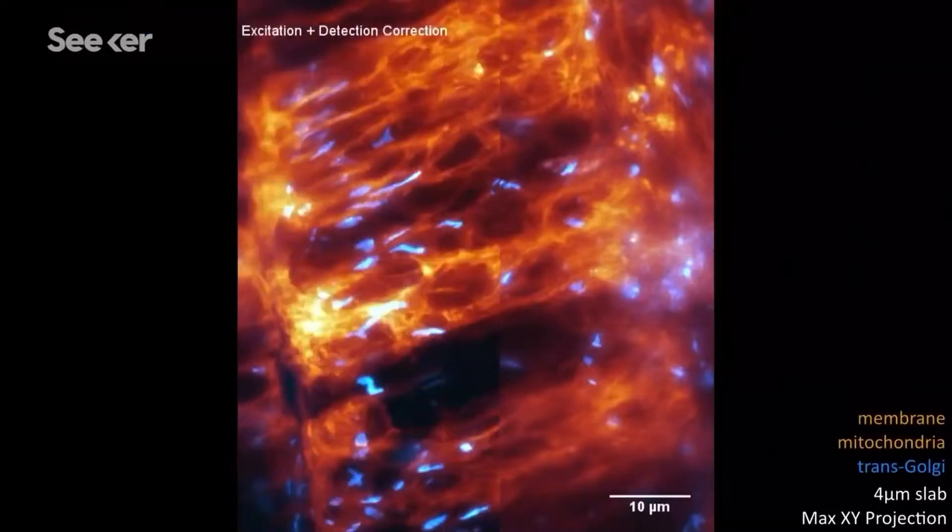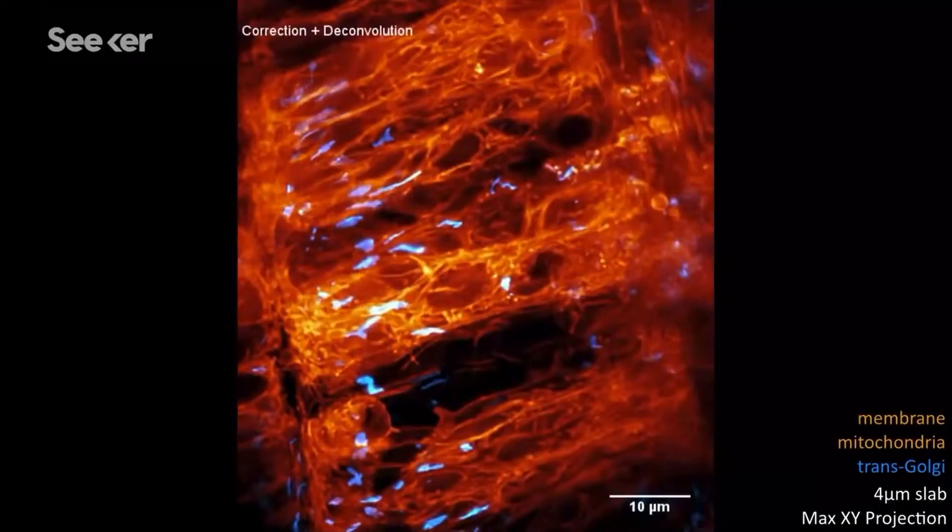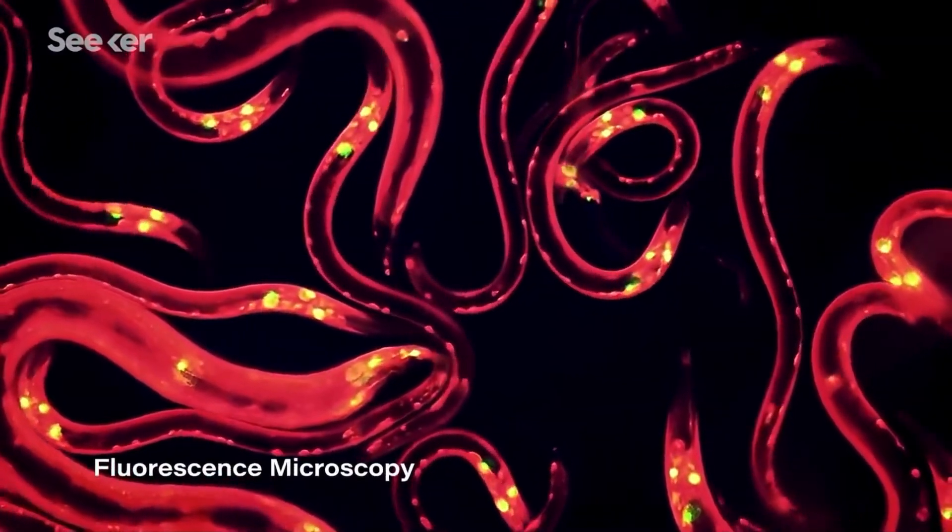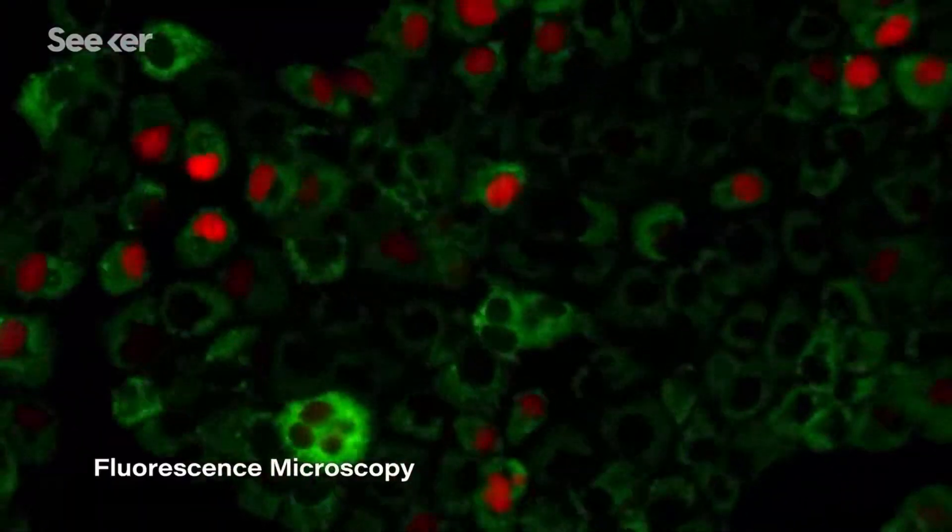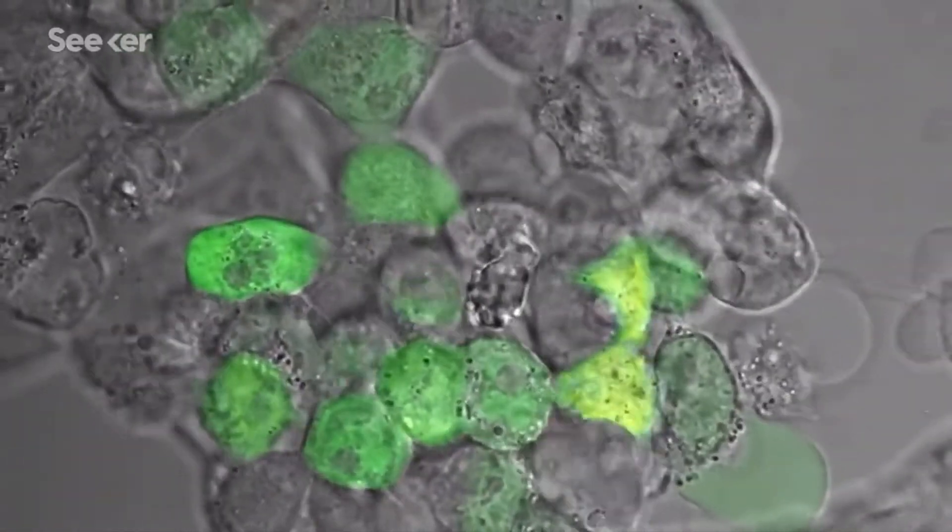But seeing biological processes inside living samples without harming them is easier said than done. One of the ways scientists image these dynamics is with fluorescence microscopy. However, harsh light from this technique can cause phototoxicity, meaning the cell can get sick during the imaging session.